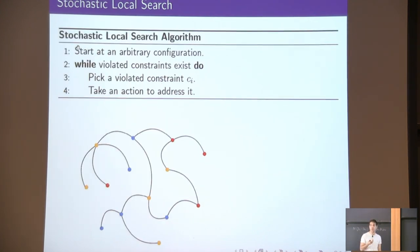How do we prove that families of constraint satisfaction problems are tractable? One way to do so is to apply a stochastic local search algorithm, and show that it works, that it can find a solution.